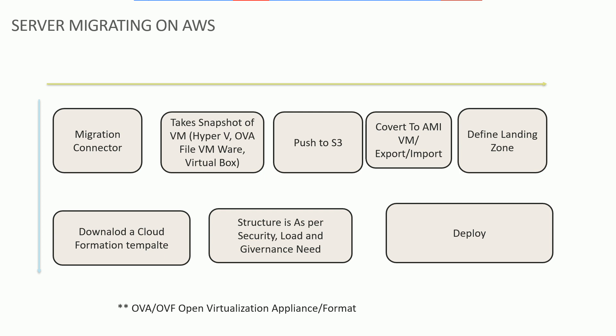Most cloud platforms have a Cloud Formation template — if they don't, you can use Terraform, which provides a slew of templates. You can also use different tool sets available in the market. You set up your Cloud Formation template specifying how many copies of each VM to create, how things will be on peak load versus low load — everything is configured in that template, which generates a JSON or XML file. The different platforms have different names for it, but the structure is as per your security, load, and governance needs. Then you deploy it.